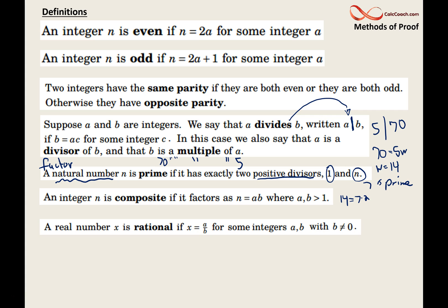And then, finally, a real number x is rational if x = a/b for some integers a, b with b ≠ 0. And a real number x is irrational if you cannot write it as a fraction of integers. It's the opposite of being rational.